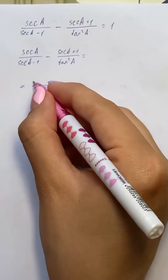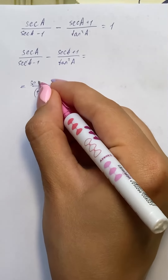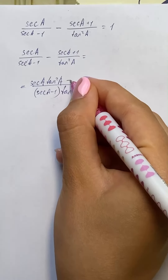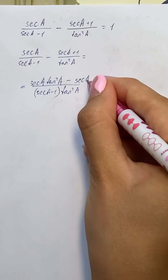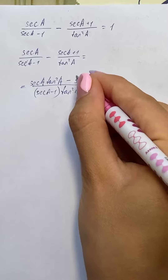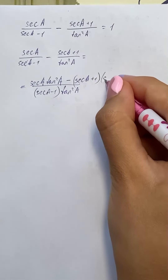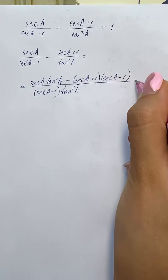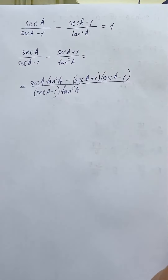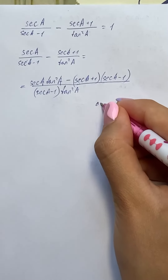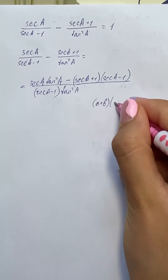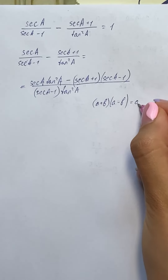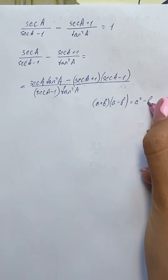So in the numerator we have secant of a times tangent squared of a, minus secant of a plus one times secant of a minus one. Now we're going to use the identity which looks like a plus b times a minus b equals a squared minus b squared.